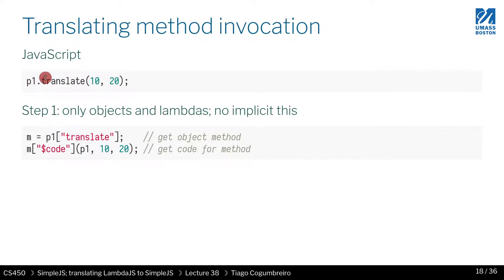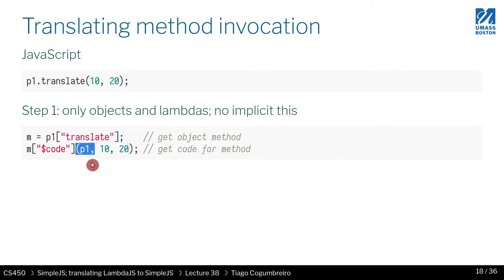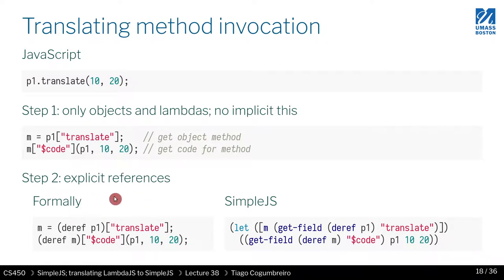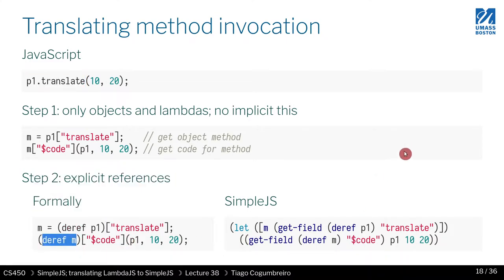For method invocation — for example p1.translate — without memory, we'd get the code associated with translate and pass p1 as "this". First we get the method (which is an object), then call the code of that method and pass "this" by sending p1. But with memory, we must make the drefs explicit: first dref p1.something, then dref translate (since the field stored there is another object), giving a second dref. Finally you call things as usual. In simple.js this is written as shorter syntax.